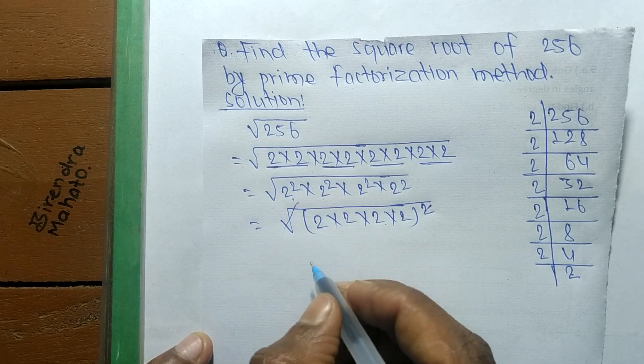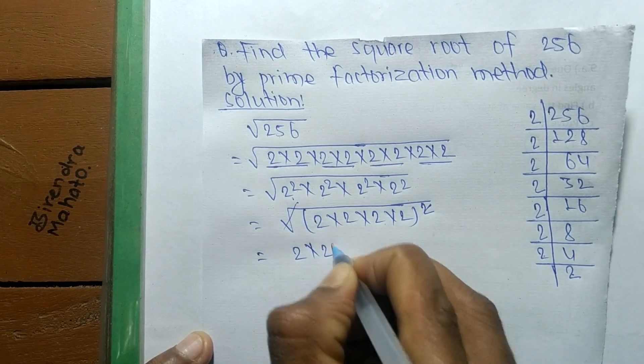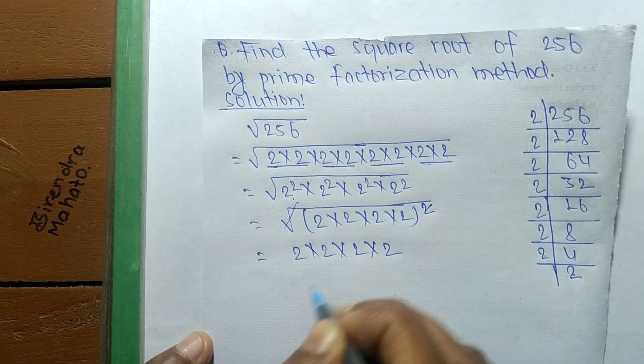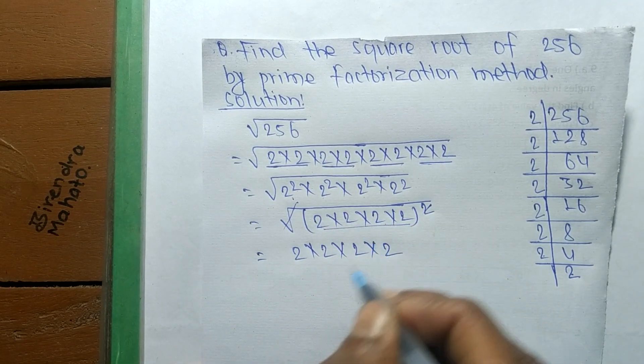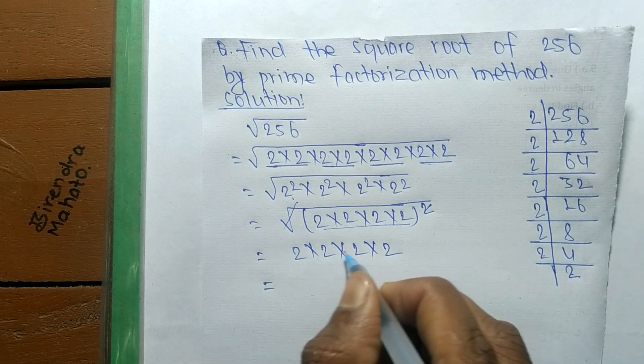They cancel each other, and the remaining numbers are four 2's. So these all numbers come out of the square root. Now we find out the product of all these numbers.